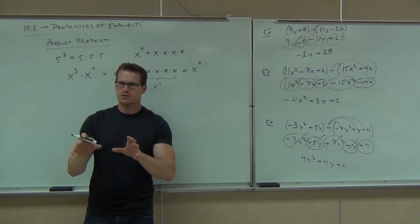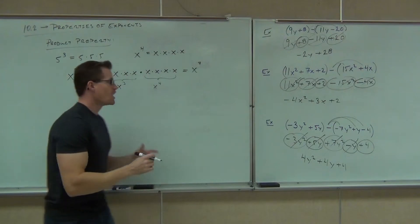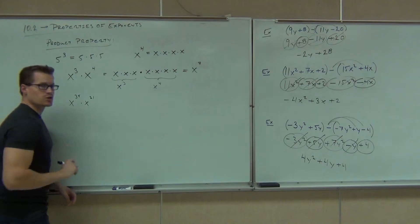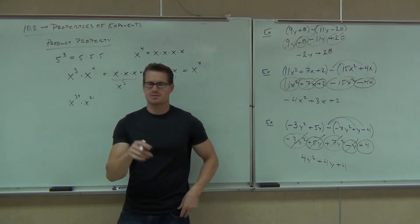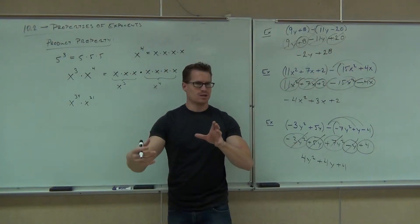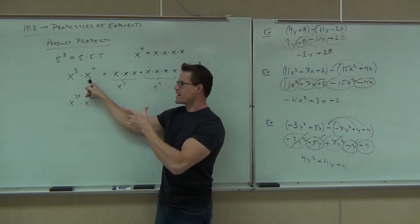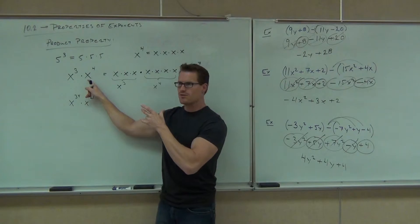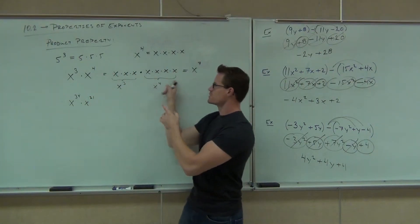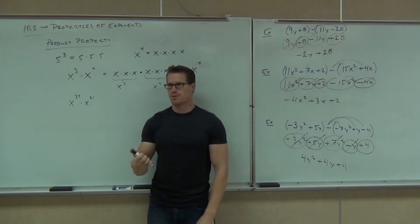Are you okay with that so far? You could write out all those x's, but what if I gave you x to the 34th times x to the 21st? Are you going to want to write out all those x's? What this says is, if I have three x's being multiplied here and four x's being multiplied here, altogether I have seven x's. Is there a way to get directly from here to there? Sure — that is the product property you just learned.